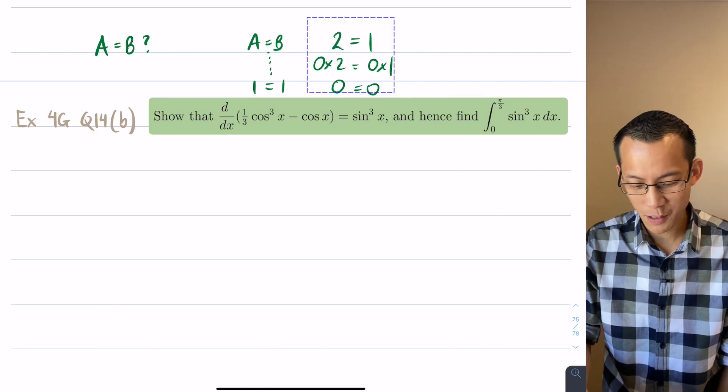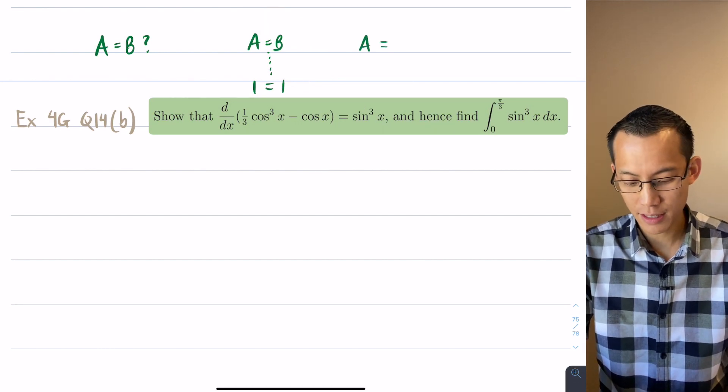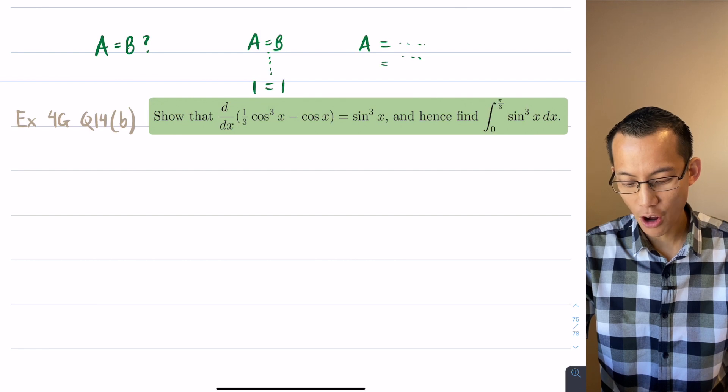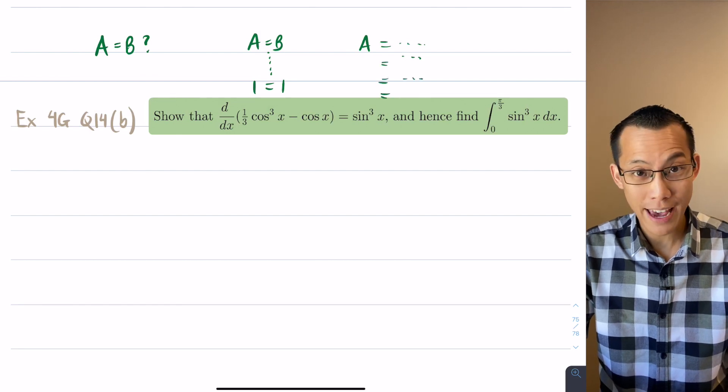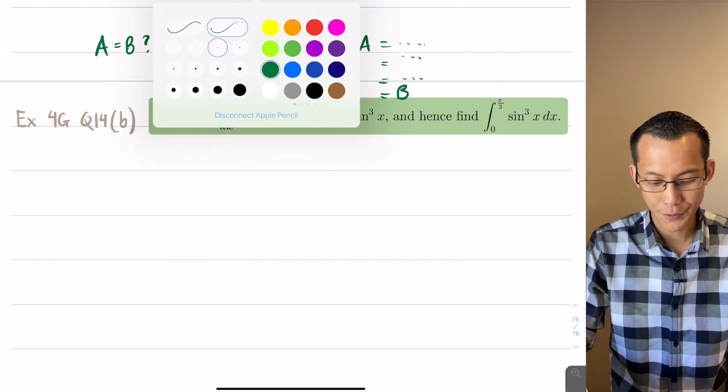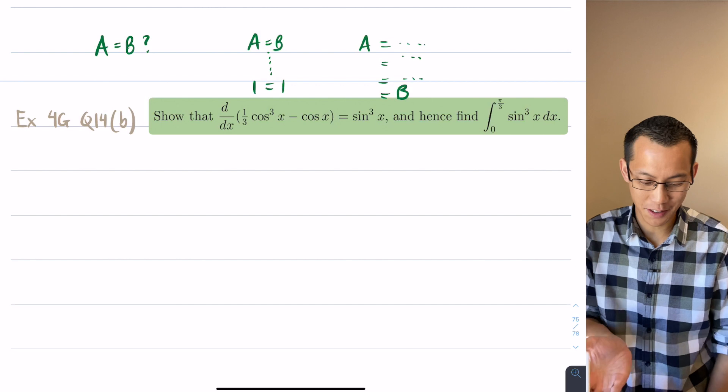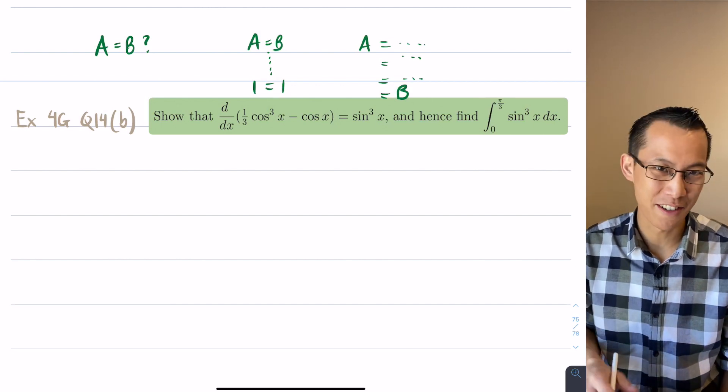Instead what you need to do is start with one side like A, the left-hand side, and then start doing some things on it and then hopefully after doing enough things you'll end at B. In this case, I'm going to start on the left because I've got a thing to differentiate, I know how to differentiate, let's go for it.